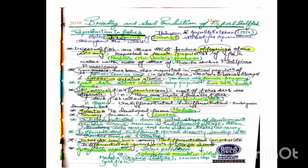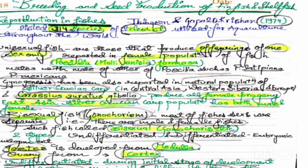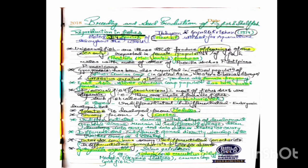First we will see the introduction — how reproduction in fishes occurs. The scientists Jingran and Gopal Krishnan in 1974 listed 314 species of teleosts utilized for aquaculture throughout the world. These 314 teleost species are used for aquaculture in different places across the world.